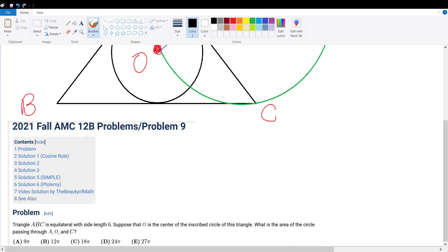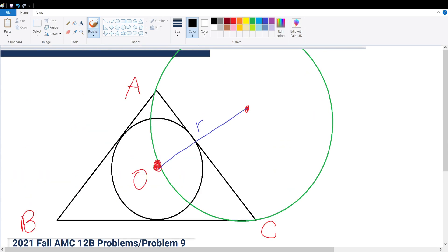We're solving AMC 12B problem number 9. I drew this shape out and enlarged it here so we have an easier time solving this question. We're given this is an equilateral triangle of side length 6, so that's 60 degrees, 60 degrees, 60 degrees.